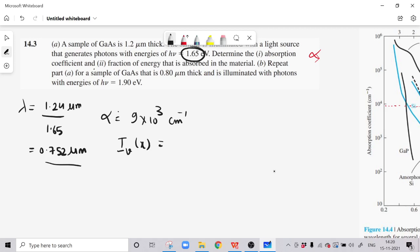I nu of x is equal to I nu naught times e raised to minus alpha, e raised to minus 9 times 10 raised to 3 per centimeter times 1.2 micrometer.